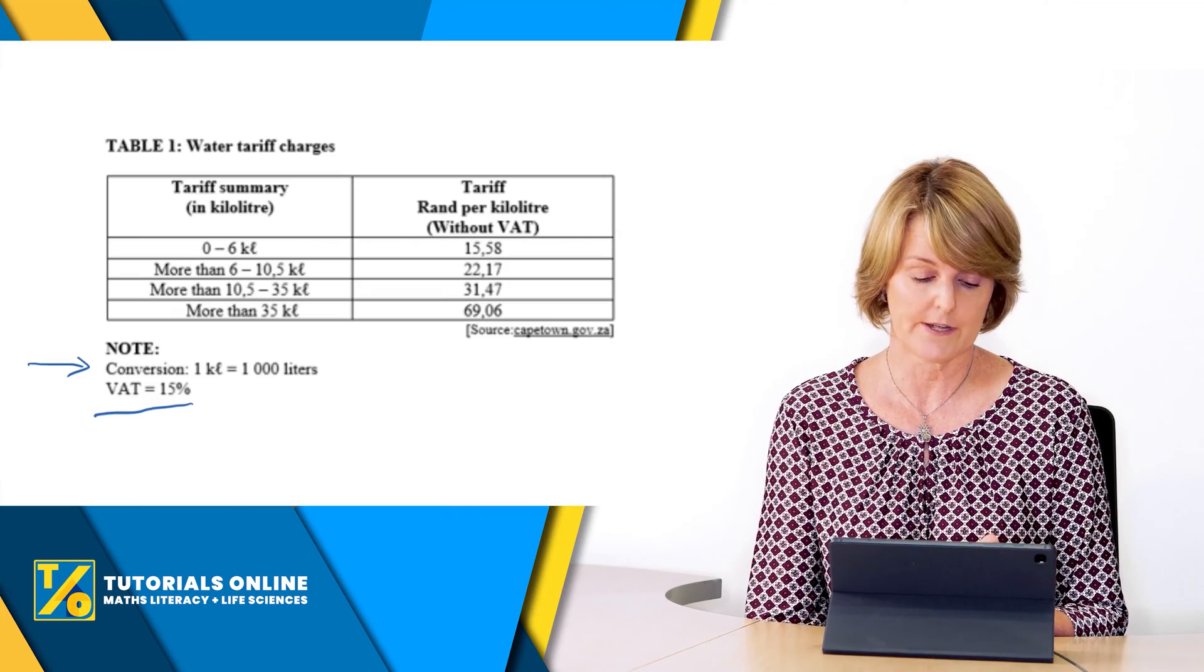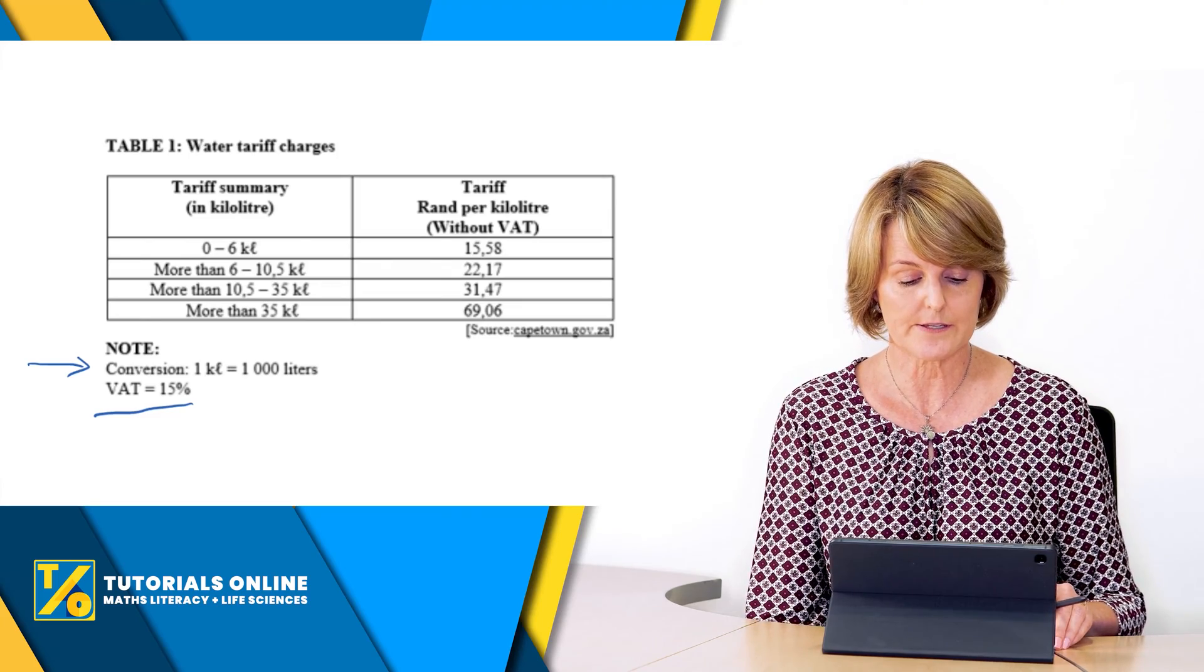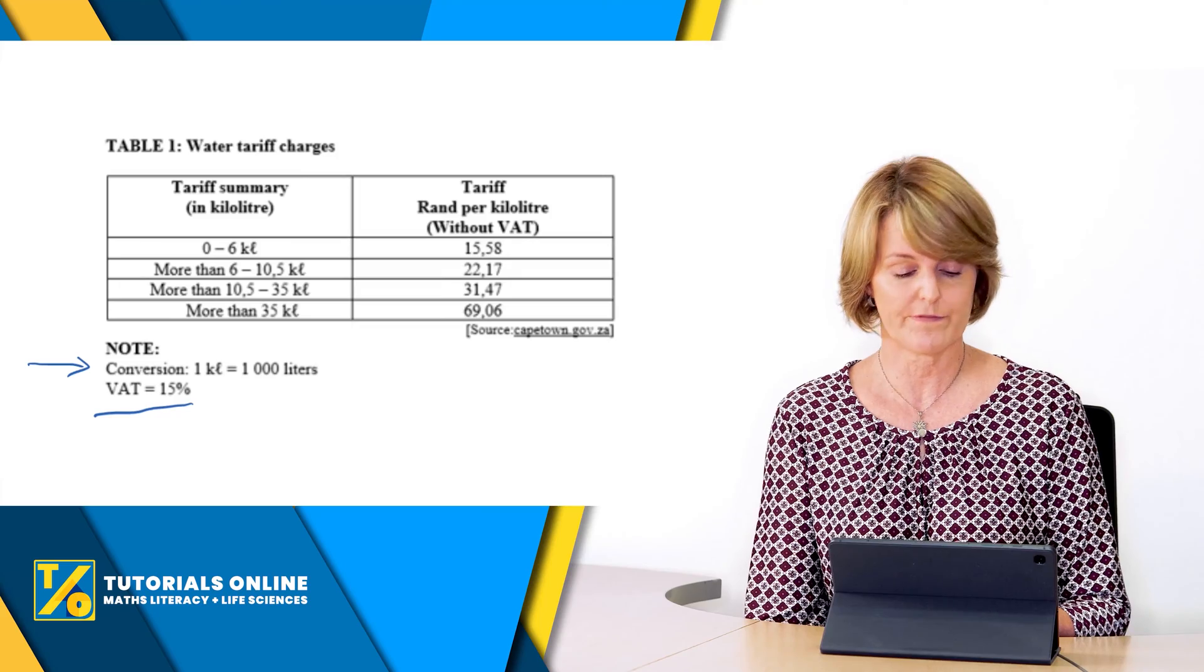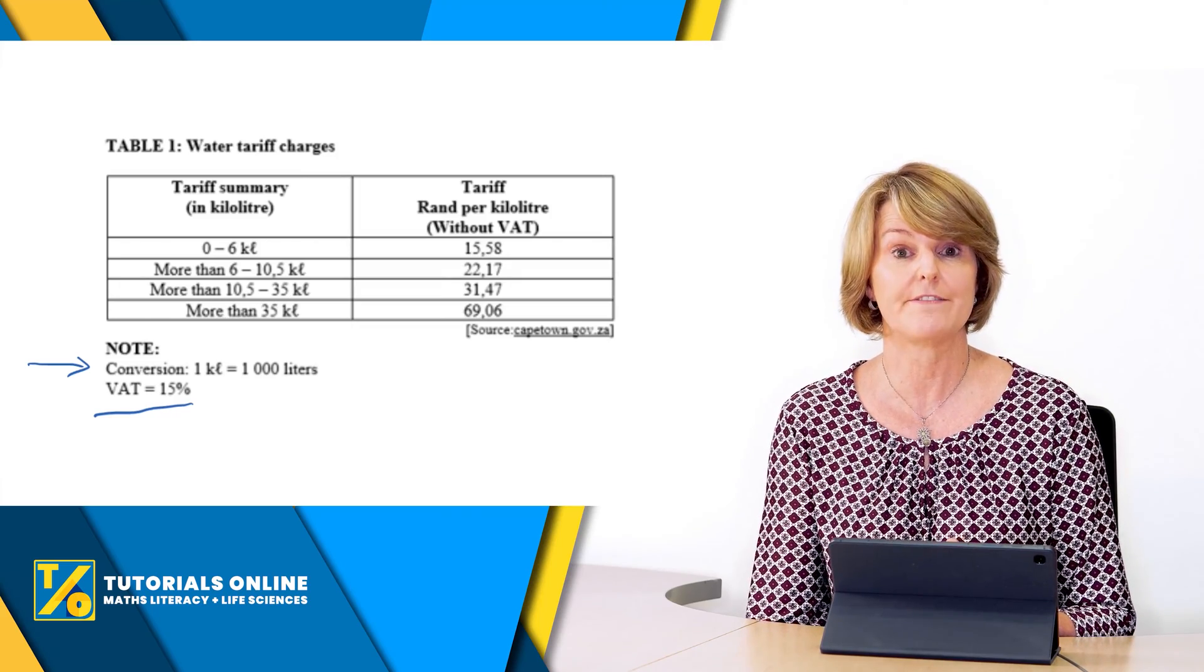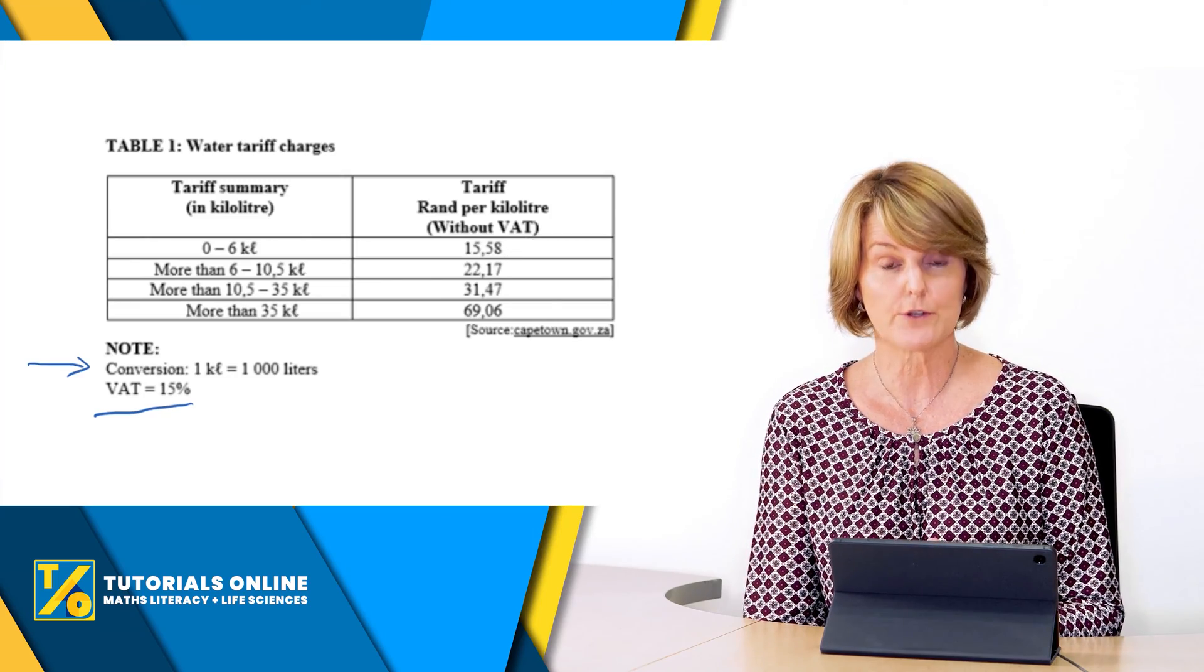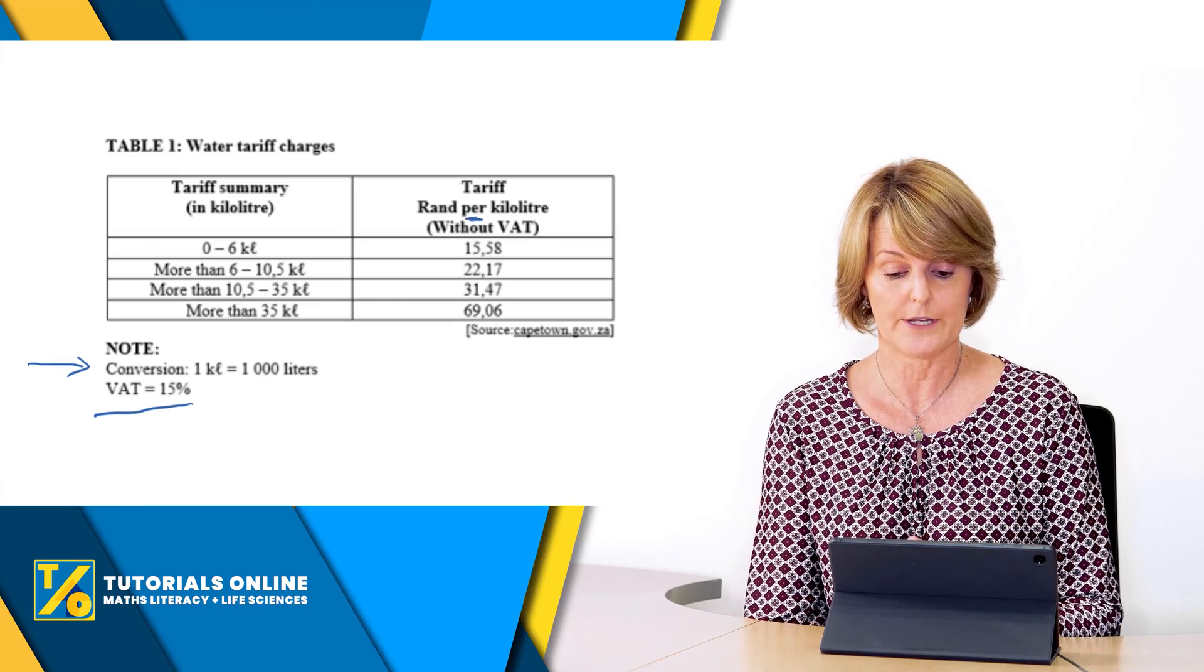If you look at the tariff summary, the left hand column of that table, it says zero to six kilolitres and then it says more than six to 10.5 kilolitres and it keeps going up right up to more than 35 kilolitres.